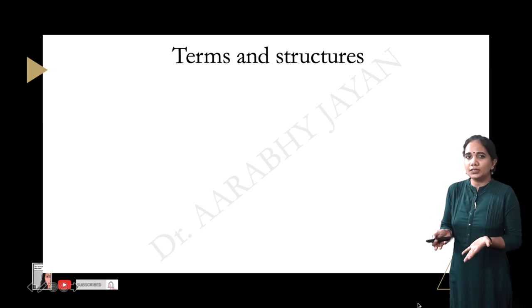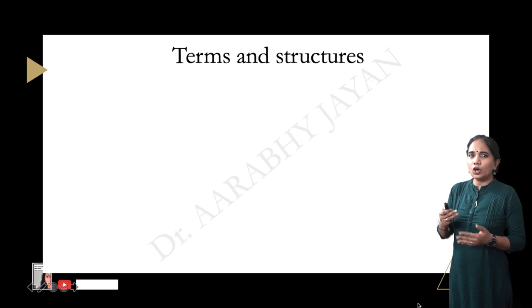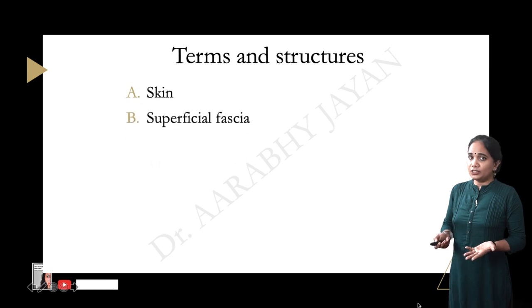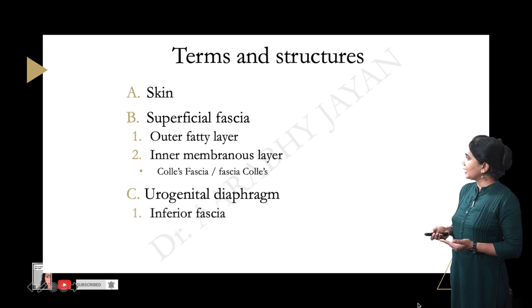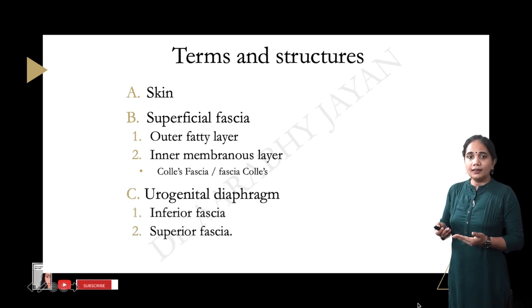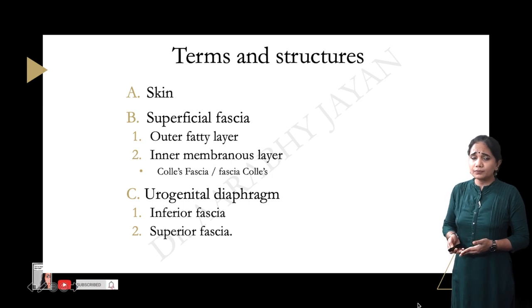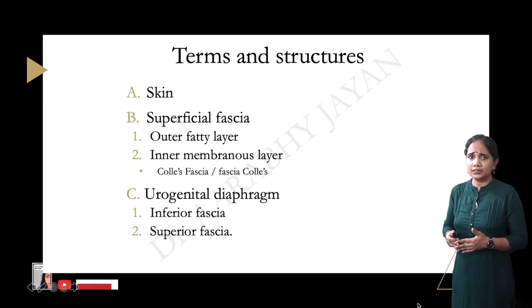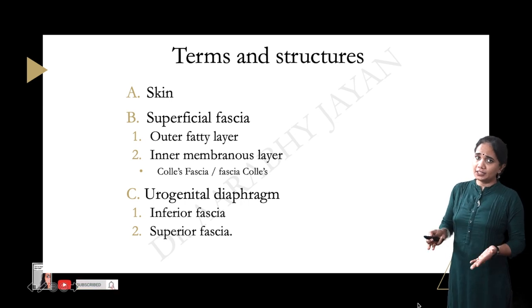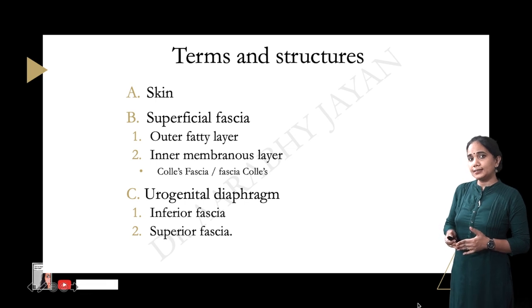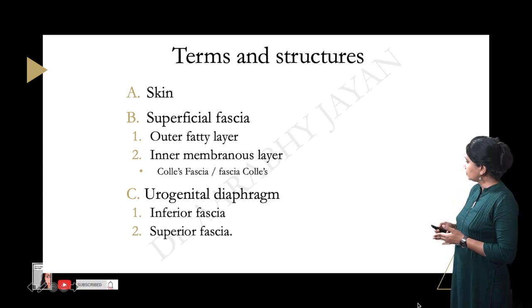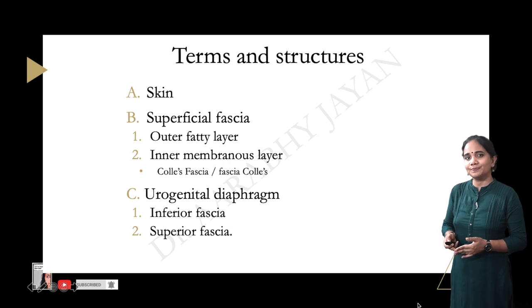Before going into the boundaries of the perineal pouches, we need to know a few key terms and structures. These include the features of the skin, the superficial fascia — arranged into an outer fatty layer and an inner membranous layer — and the urogenital diaphragm. Although many textbooks say the urogenital diaphragm does not exist, for examination purposes we will still address it. We will also cover the urogenital diaphragm's two fasciae: the inferior fascia and the superior fascia.